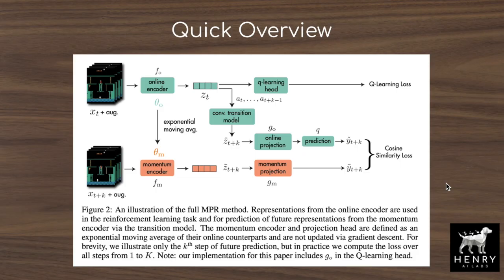In this slide, we'll get a quick overview of the momentum predictive representation learning algorithm before contrasting it to this progression of self-supervised contrastive learning algorithms, as well as how auxiliary tasks have been used for representation learning and reinforcement learning — particularly in the CURL paper that also has an auxiliary contrastive learning loss to better formulate the representation from high-dimensional images in a visual control task.